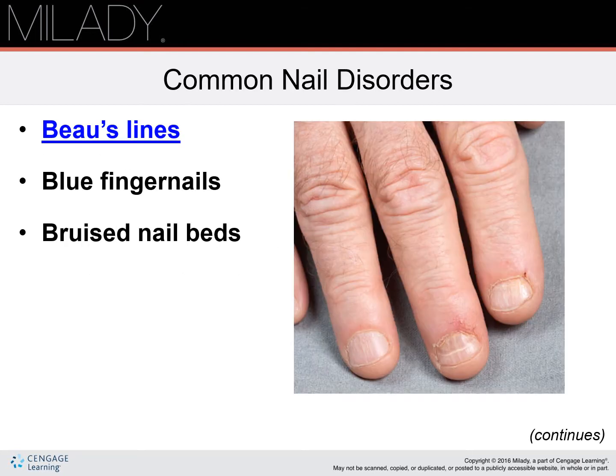Now we are going to talk about common nail disorders. First, we have Beau's lines, sometimes called furrows or corrugations. These are visible depressions running across the width of the natural nail plate, and are a result from a major injury or illness that has traumatized the body.